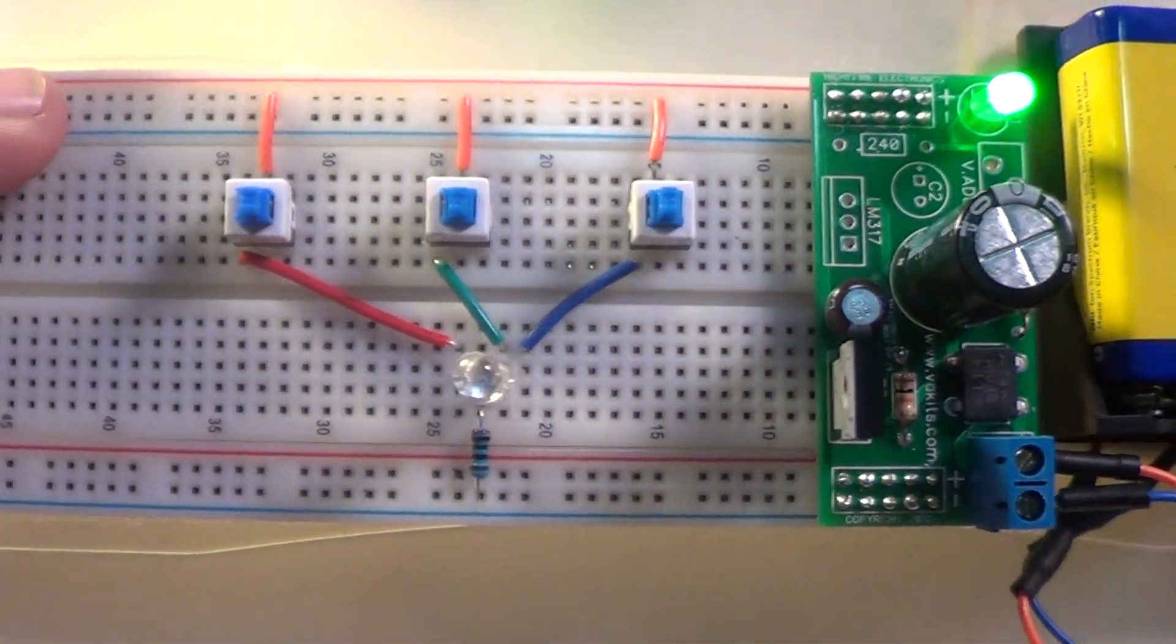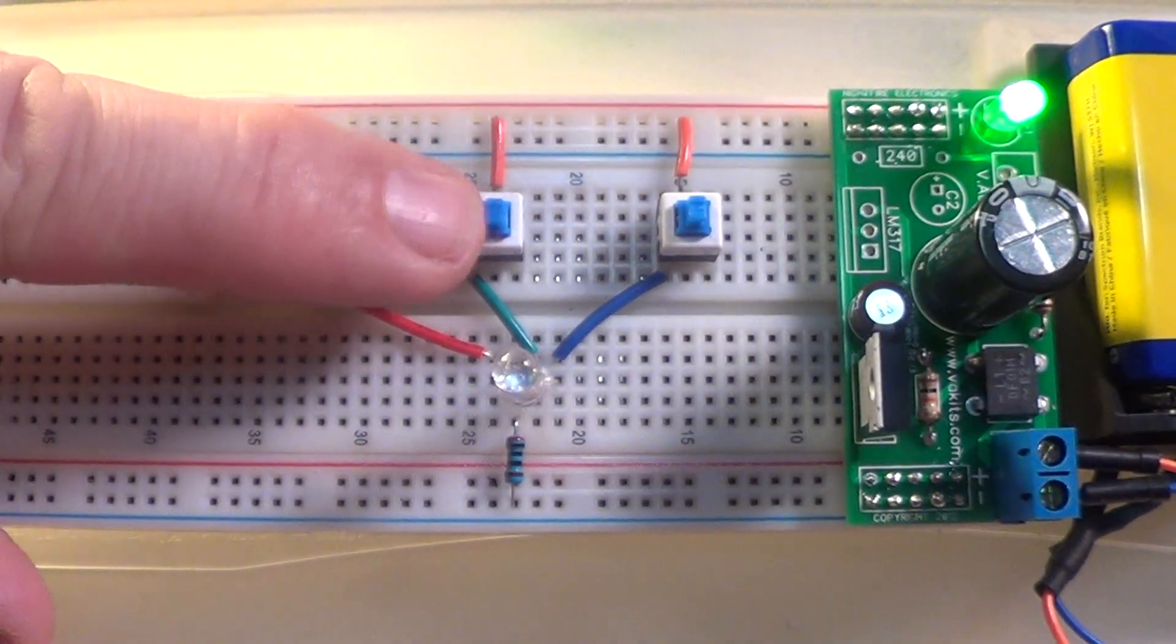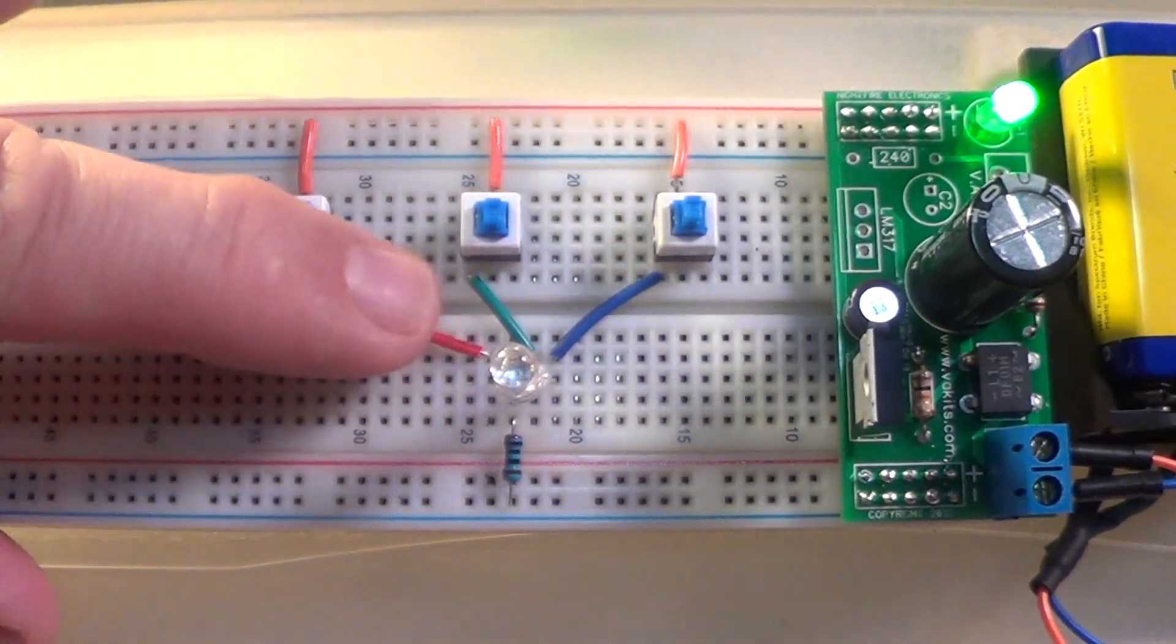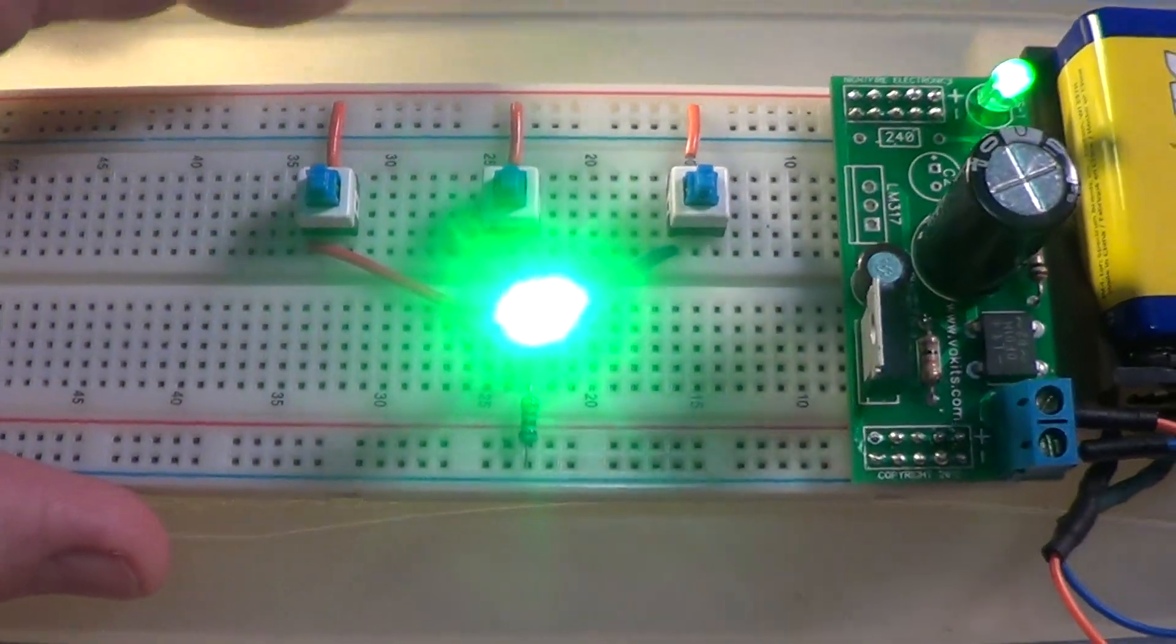And now the next light is powered by this red jumper through this switch with a green cable going to the light again. Let's see if the green light works. So there's the green light.